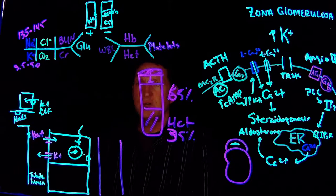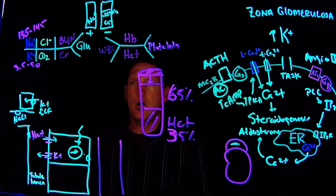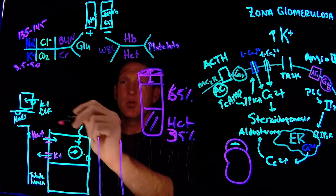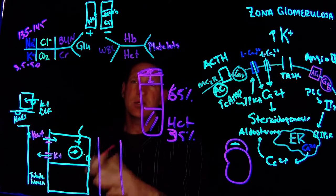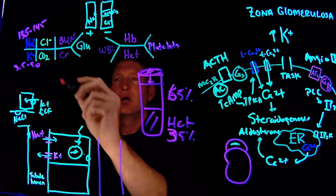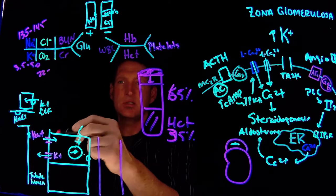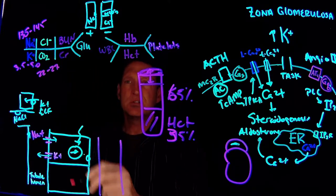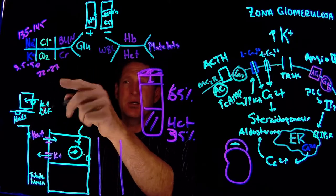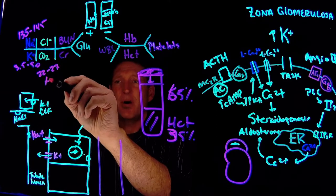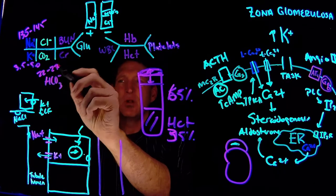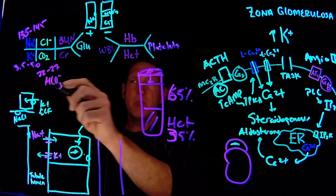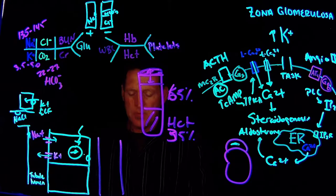CO2 on the metabolic panel is actually an indirect measurement of bicarbonate, measured in millimoles per liter. The range for CO2 on the panel — typically 22 to 27 — is the same range as bicarbonate in mEq/L. So this CO2 value is essentially an indirect measure of my bicarbonate. What can cause bicarbonate to go up and down? We've already covered that in acid-base balancing.